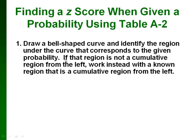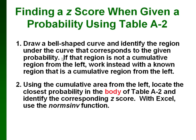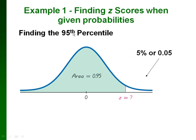Sometimes we have the probability and want to go backwards and find the z-score. To do that, we look up the probability or the area in the middle of our table. Or if we're using Excel, we use a slightly different function, which is NORMSINV.